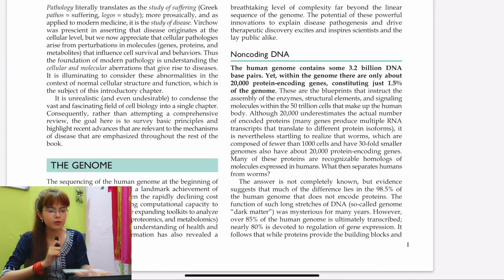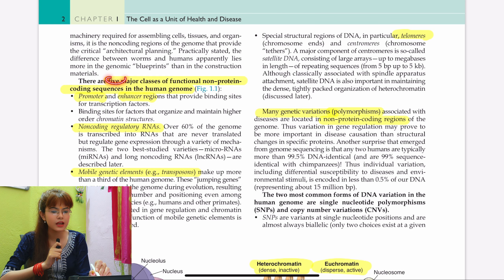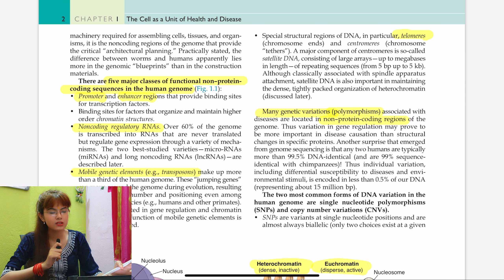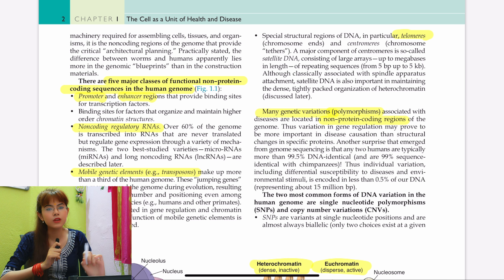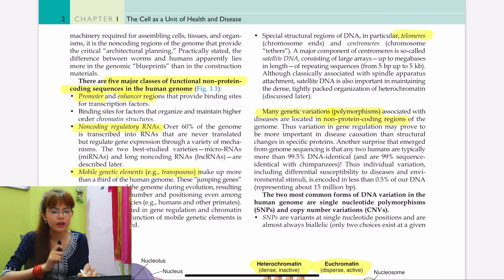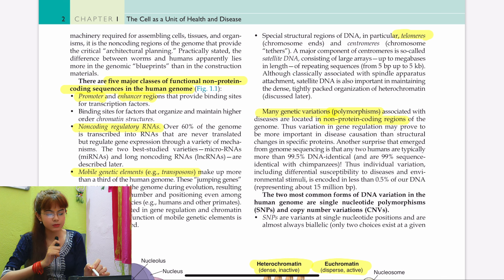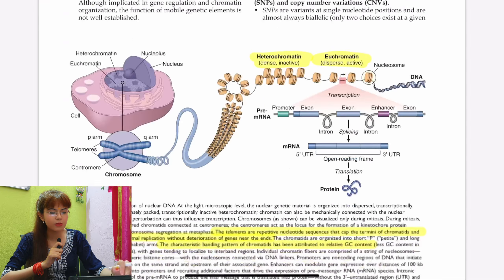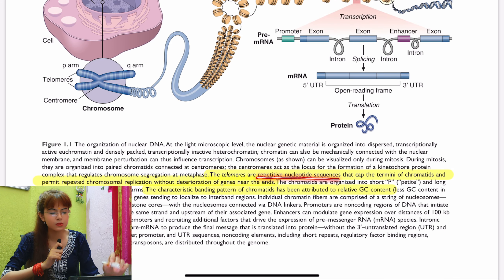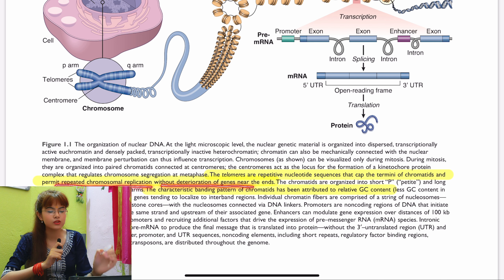Starting with the first important topic: there are five classes of functional non-protein coding sequences. Non-protein coding sequences are those which do not undergo translation and do not produce any protein, yet they play a very important role in regulation of the human genome. These areas include promoter and enhancer regions, binding sites of chromatin structures, non-coding regulatory RNAs, mobile genetic elements called transposons, and telomeres.